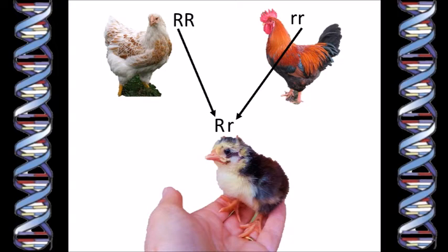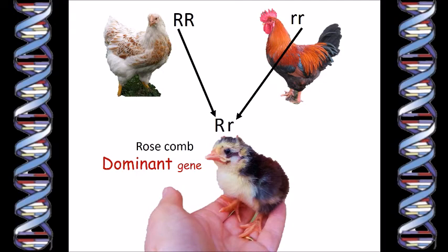So we know that our baby chicken has one rose comb gene and one single comb gene. But what is the shape of the comb on the baby chick's head — the same as mum, the same as dad, or something in between? In fact, the baby chicken's actual comb shape will be a rose comb. The reason is that the gene for rose comb is what's called a dominant gene. Dominant just means the gene will be expressed even if there is only one copy of it. Although the purebred Wyandotte had two copies of the rose comb and our baby chick has only one copy, the dominant rose comb gene expresses itself, and the comb on the chick's head will be a rose comb, just like mum's.